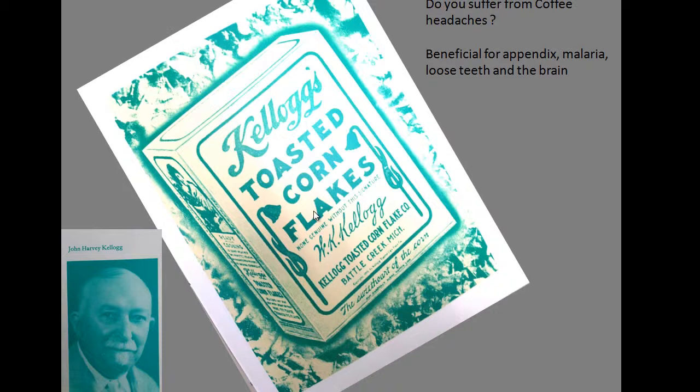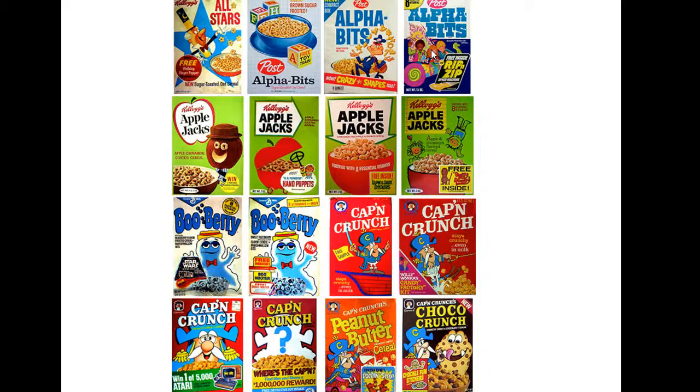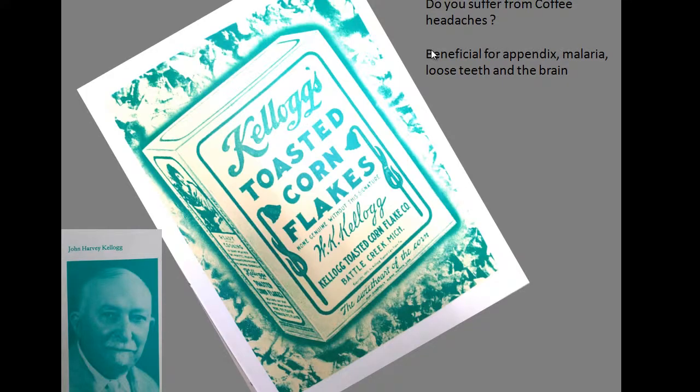Now let's look at cornflakes because it's an interesting story. And this was started by John Harvey Kellogg, called the cereal king. It was initially marketed for people who have what's called coffee headaches, people who have drunk coffee in the morning, and was claimed to be beneficial for appendix, malaria, loose teeth, and the brain. So this is an extremely successful product and it's consumed in millions of tons. Now the interesting thing is that it was also one of the first products to be specifically marketed for children.